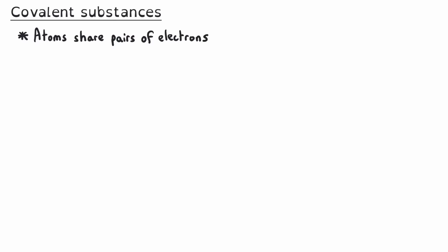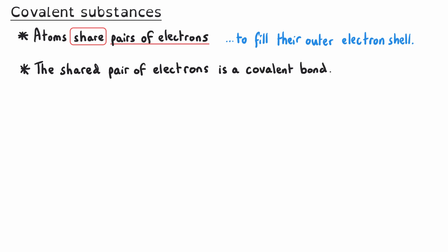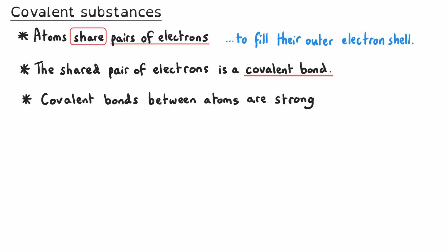Covalent substances are formed when atoms share pairs of electrons to fill their outer electron shell and become stable. The shared pair of electrons is a covalent bond, and it's the covalent bond — that shared pair of electrons — that holds the atoms together. The covalent bonds between atoms are very strong, which means they are very difficult to break. It requires a lot of energy to separate the atoms from that covalent bond.